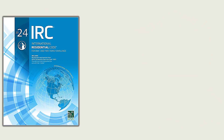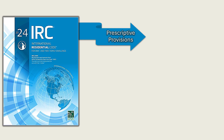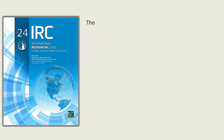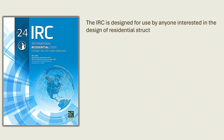The International Residential Code, or the IRC, provides clear and accessible guidelines to help ensure that rafters are properly sized for safety and performance. The IRC provides prescriptive provisions for many structural elements, including roof rafters. These are known as prescriptive provisions because the code offers predefined solutions such as span tables, allowable spacing, and material options that can be followed without the need for complex engineering calculations or a licensed structural designer. These solutions are based on widely accepted engineering principles and are deemed safe under typical residential conditions. This means that the IRC is designed for use by anyone interested in the design of residential structures and is therefore not limited to licensed engineers or architects.